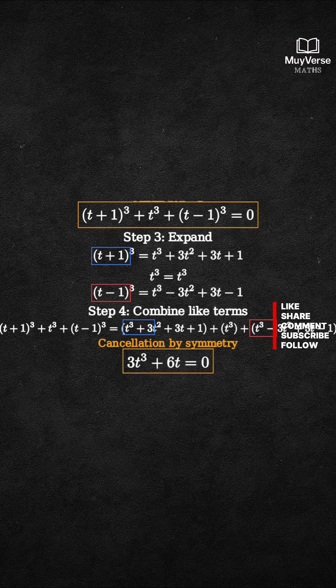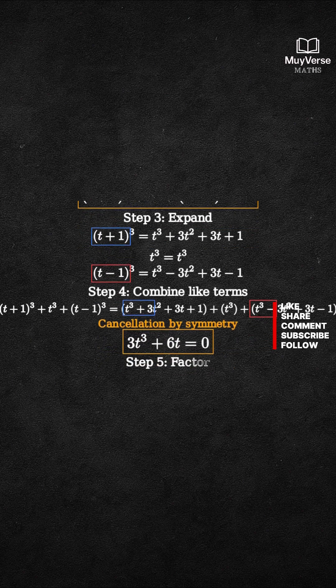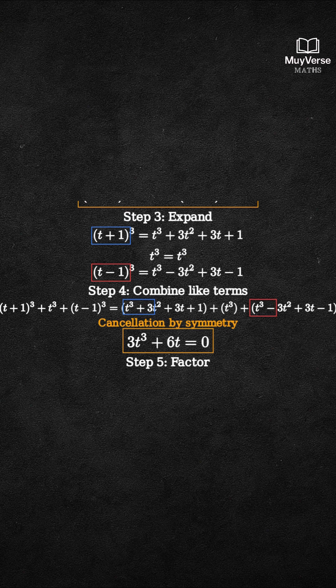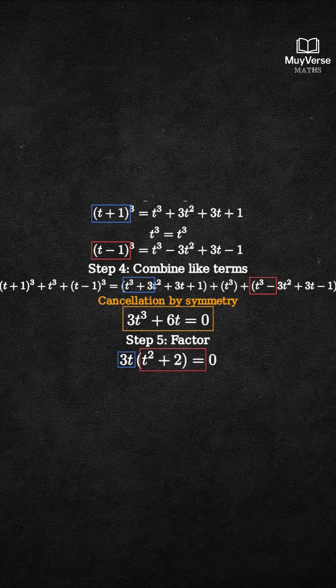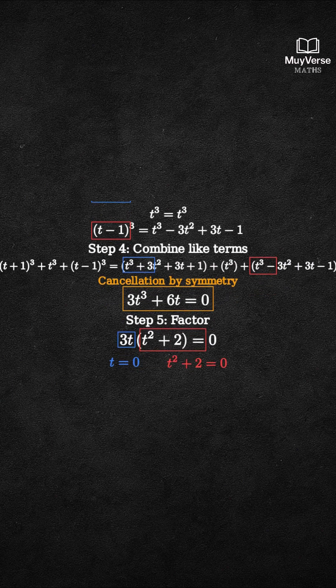Step 5. Factor out the common factor. 3t times t squared plus 2 equals 0. So either t equals 0 or t squared plus 2 equals 0. Solve the branches.